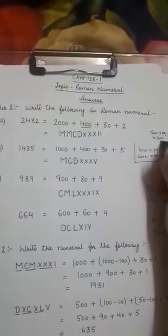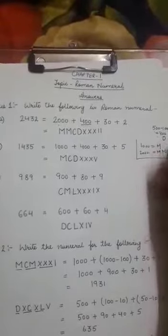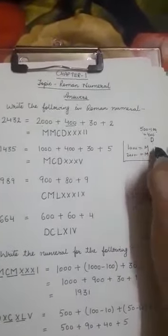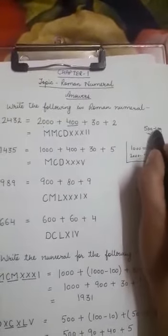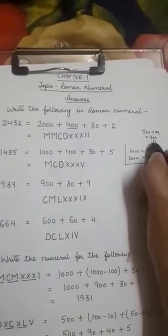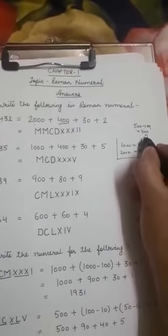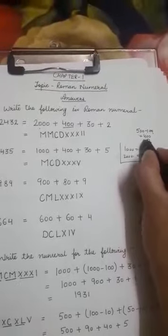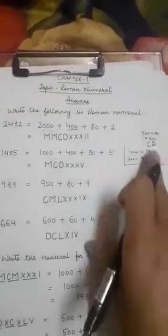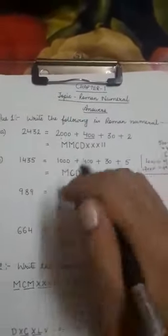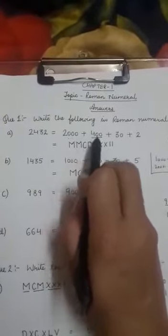First I will write D for 500 and I have to subtract 100. So I will write C. Symbol for 100 is C and I will write this C to the left of D which means 400. So symbol for 400 is CD.